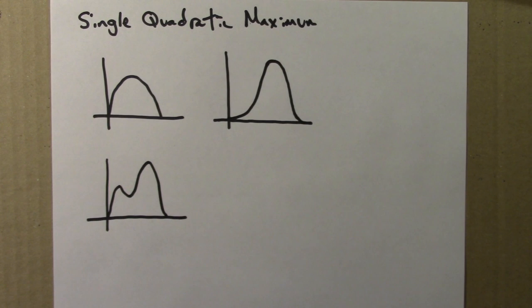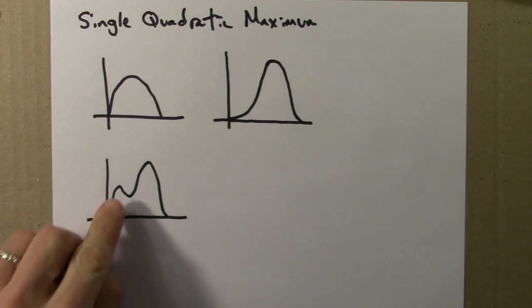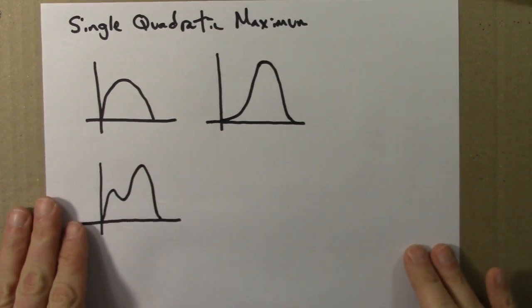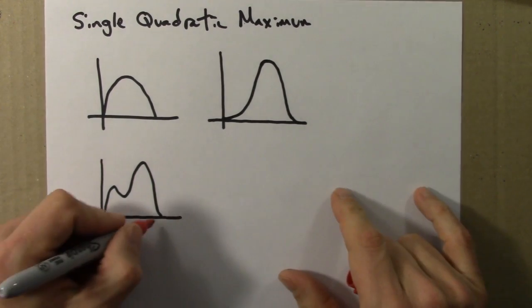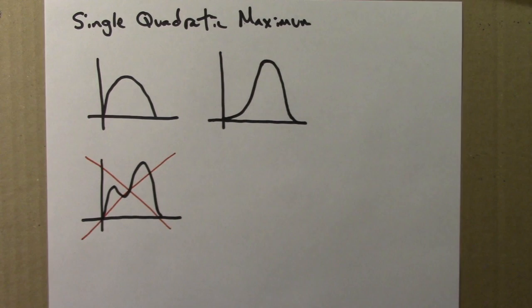This function does not have a single quadratic maximum because it does not have a single maximum. It has two. The local max here, and then there. So this function does not meet the criteria in that statement that I gave on the previous piece of paper.